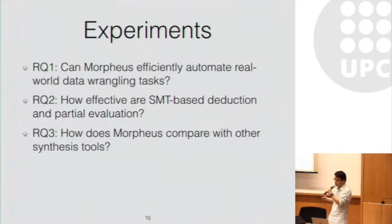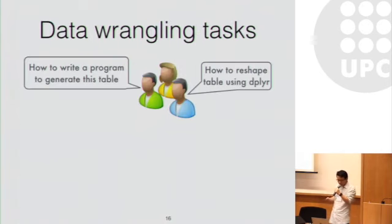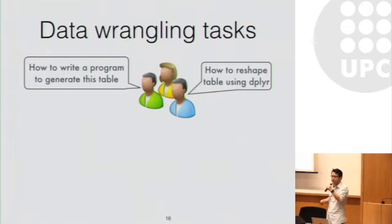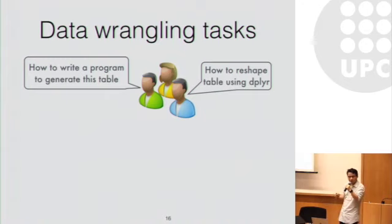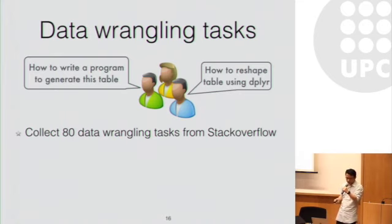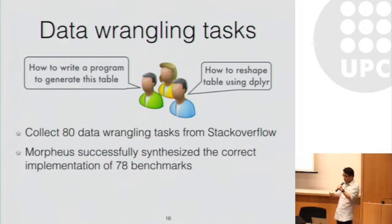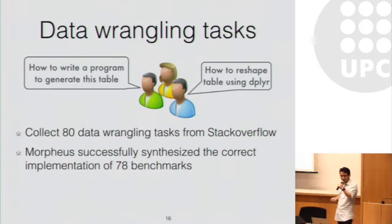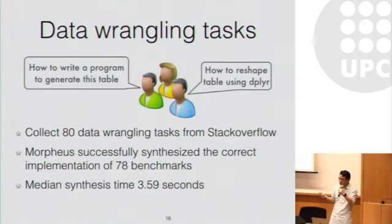To answer the first question, we collected 80 benchmarks from Stack Overflow using the keywords TidyR and DPLyR — the most popular libraries in R for data wrangling tasks. We directly used the input-output examples provided in the original posts. For each benchmark, we ran Morpheus on them. Morpheus automatically synthesized a program for 78 out of 80 benchmarks within a median runtime of around four seconds.